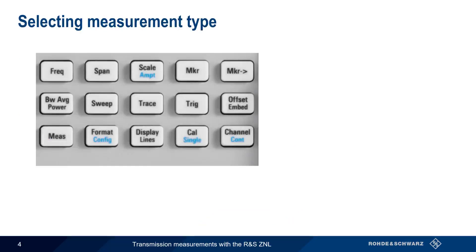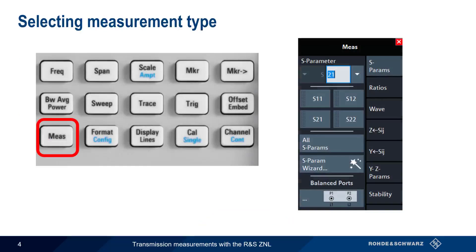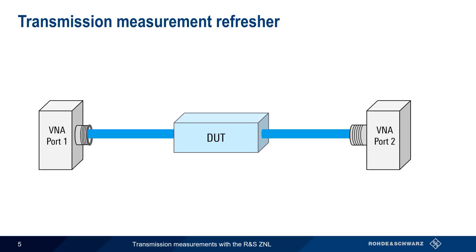To select the measurement type on the ZNL, press the Measure hard key and then choose either S21 or S12 under S-parameters. Remember that in an S21 measurement, the ZNL transmits power on port 1 and measures the power received on port 2, whereas an S12 measurement does the same thing, but in the opposite direction, that is, from port 2 to port 1.